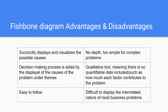Another benefit is that the decision making process is aided by the display of causes under clear themes — this ties into the clear visualization and formatting. The last benefit is that the diagram is very easy to follow, which is very helpful in business when you can present to your business partners in a simple and easy-to-follow way what's going on; for example, in a meeting you can present this and it's very simple to understand.